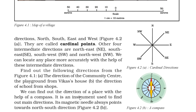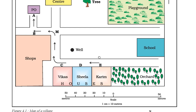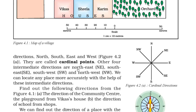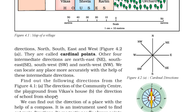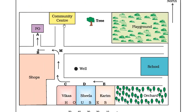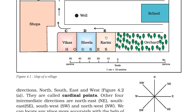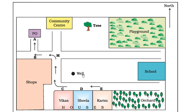We can also find out direction with the help of a compass. A compass is an instrument used to find out main directions — the magnetic needle always points to the north-south direction. Using the figure, if we want to find the direction of the community center from Vikas' house, it is in the north direction. For the direction of school from shops, taking the north-south and east-west axes, the school is in the west direction.